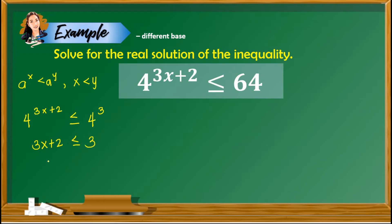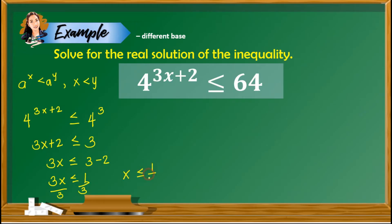Combining like terms, we have 3x is less than or equal to 3 minus 2. Simplifying, 3x is less than or equal to 1. Dividing both sides by 3, we have x is less than or equal to 1 third.